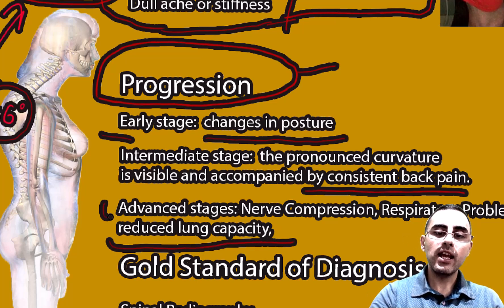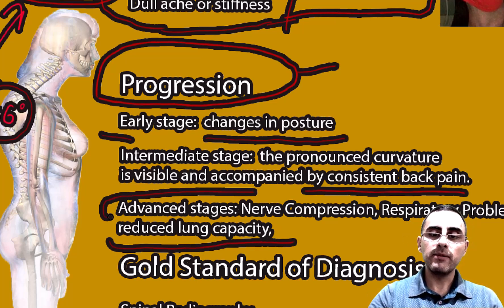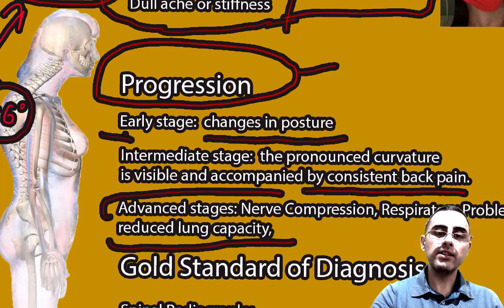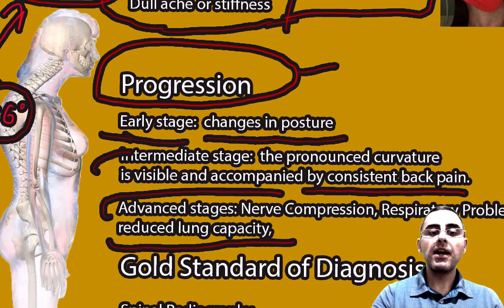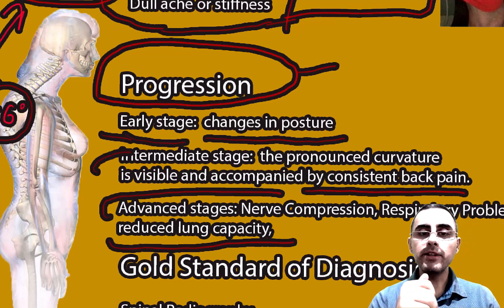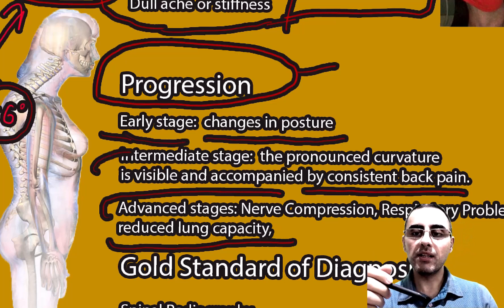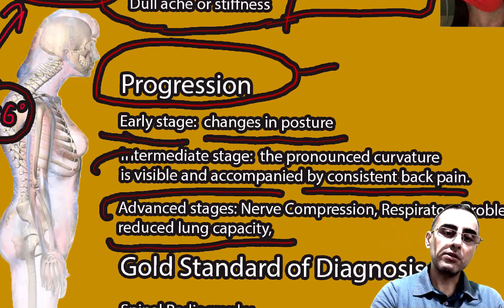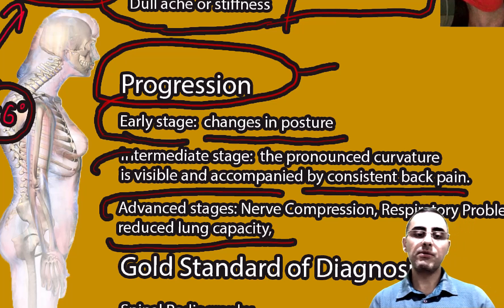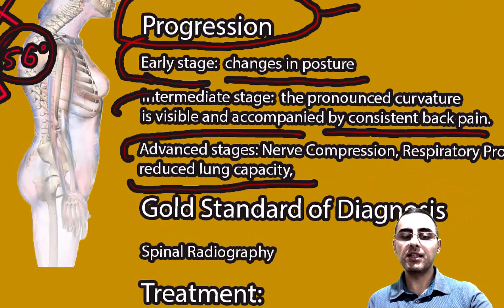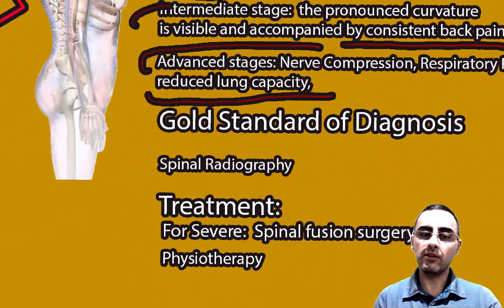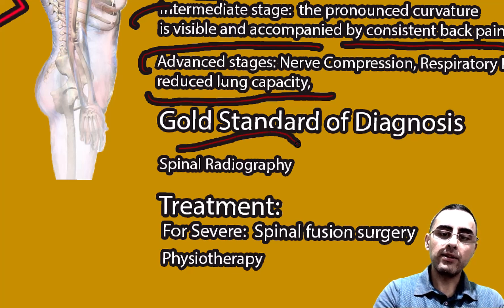Before reaching the advanced stage, early and intermediate stages offer a window for better outcomes. Earlier intervention has better outcomes and better prognosis, which is why we should intervene at early stages. The gold standard for diagnosis is spinal radiography.